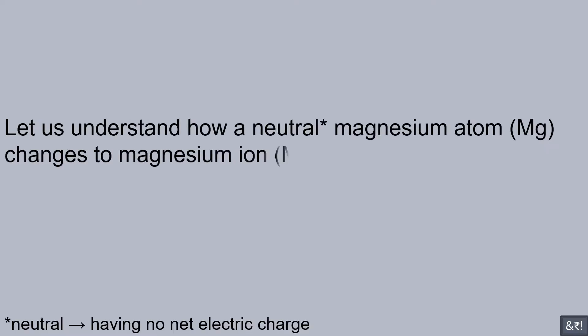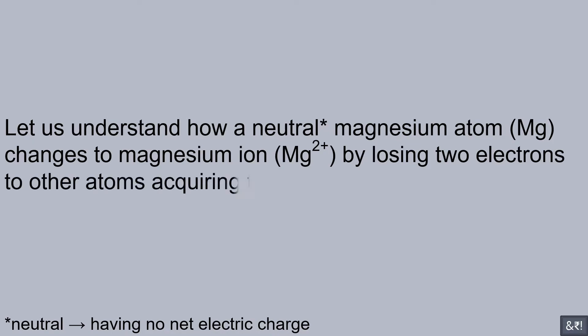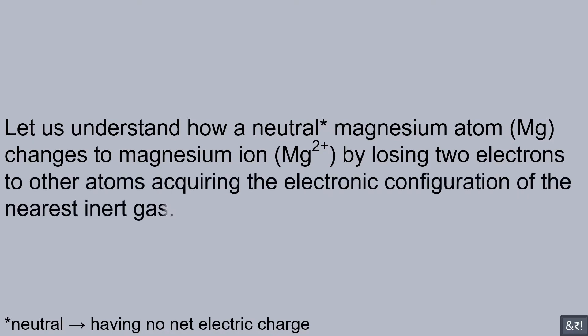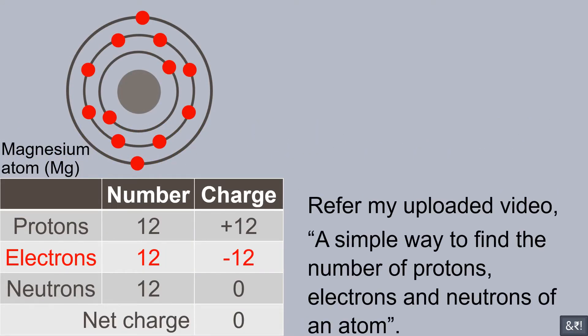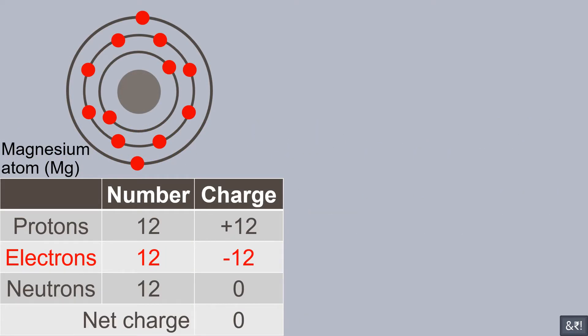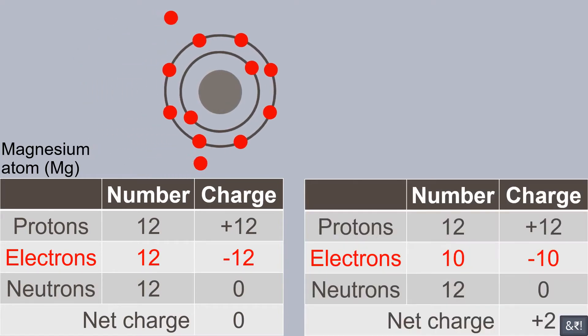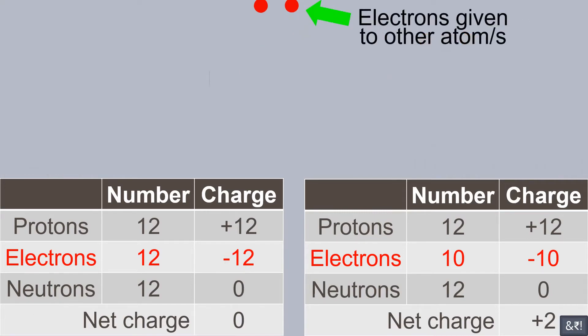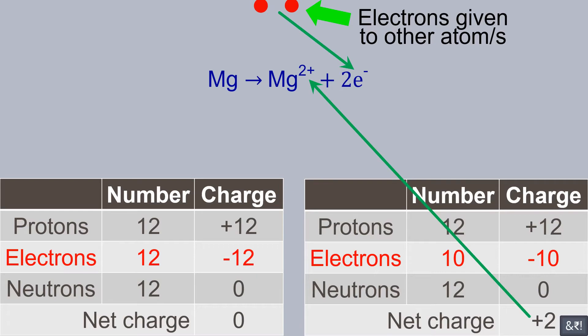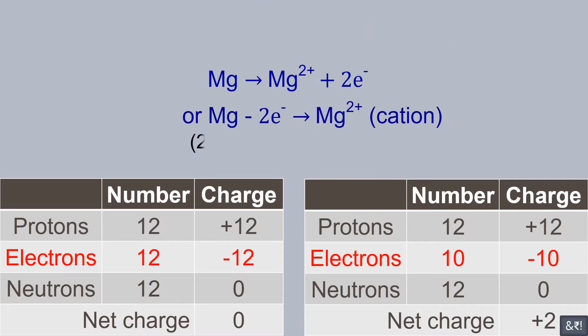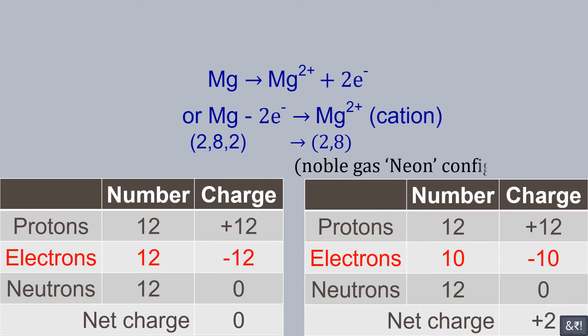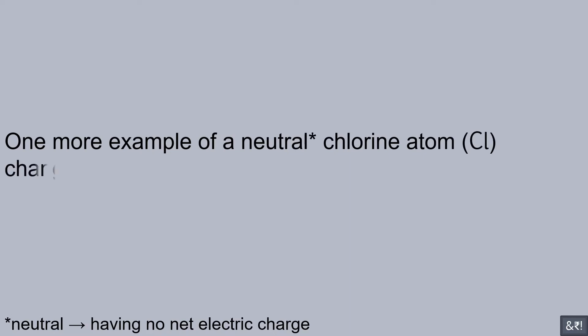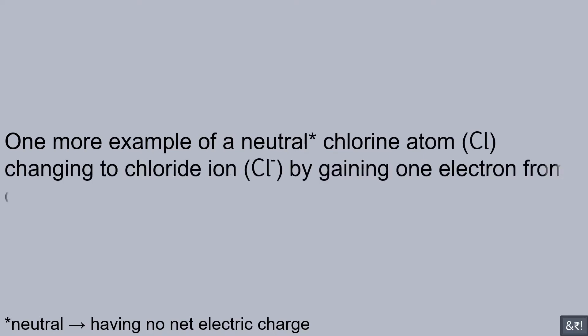Let us understand how a neutral magnesium atom changes to a magnesium ion by losing two electrons to other atoms, acquiring the electronic configuration of the nearest inert gas. One more example is a neutral chlorine atom changing to a chloride ion by gaining one electron from some other atom.